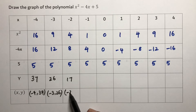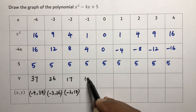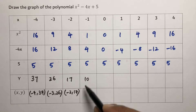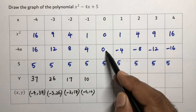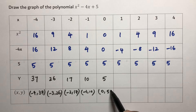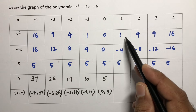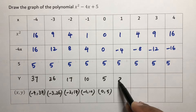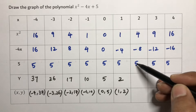For x = -2: 4 + 8 + 5 = 17. For x = -1: 1 + 4 + 5 = 10. For x = 0: 0 + 0 + 5 = 5. So the points so far are (-4, 37), (-3, 26), (-2, 17), (-1, 10), (0, 5).